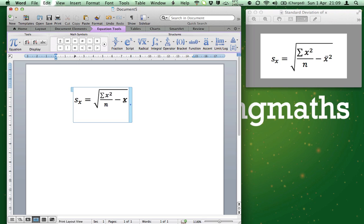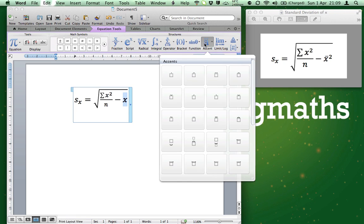Highlight the X by left clicking and dragging. It should go blue like how mine has. Click the accent icon and find the one with the line above it and select bar.